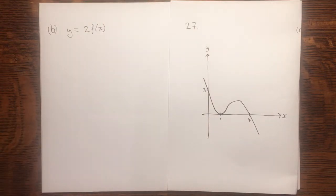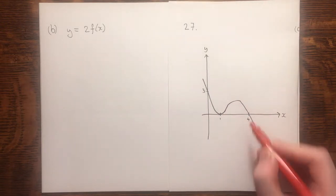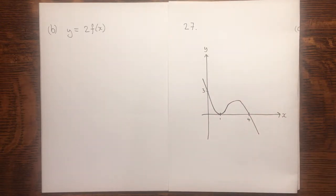In this transformation, only y values will be affected, and they'll be doubled. These intercepts here are sat on the x axis, so their y value is 0. Doubling 0 means they'll stay at 0.